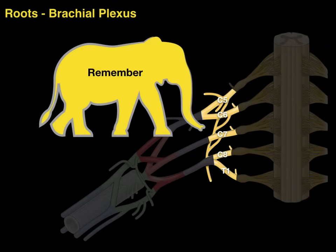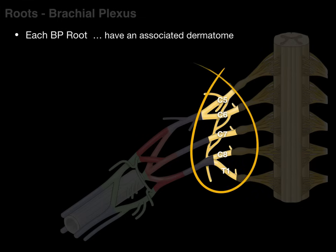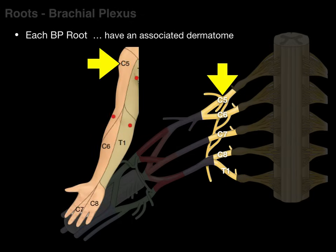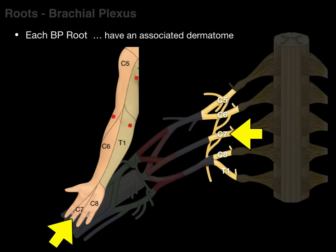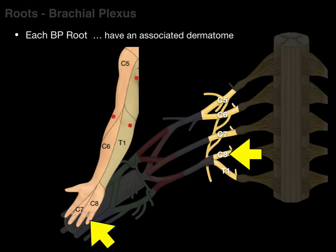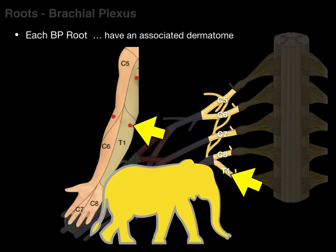A couple of things about the roots to remember. First, each brachial plexus root has an associated dermatome — an area of skin innervated by a specific spinal nerve level. So the C5 root with the C5 dermatome, C6 root with C6 dermatome, C7 root with C7 dermatome, C8 root with C8 dermatome, T1 root with T1 dermatome. The thing to remember: sensory neurons in each upper limb dermatome course to an associated brachial plexus root.